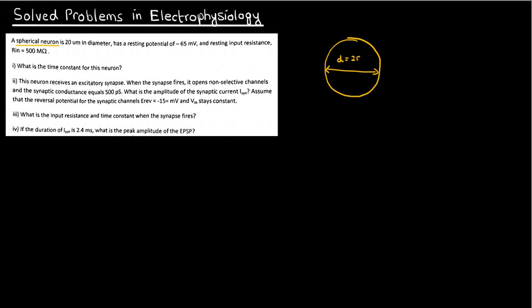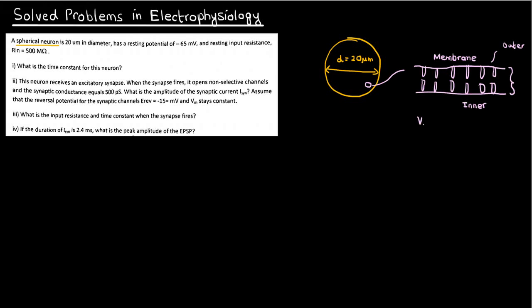Notice how I'm labeling important parts of the problem as I read through it. This is a practice I recommend adopting because it helps you zone in on important parts of the problem. The spherical neuron has a resting membrane potential of negative 65 millivolts. If I zoom into a small patch along the sphere, I'll find that the inner part of the neuron is negative with respect to the outer part by 65 millivolts.